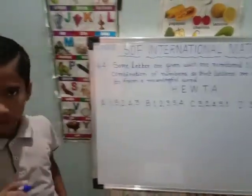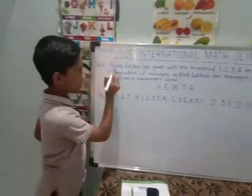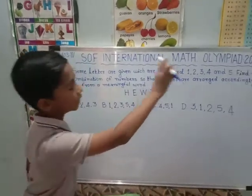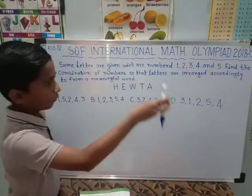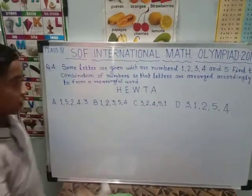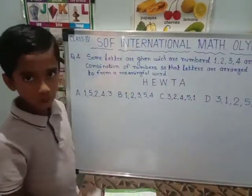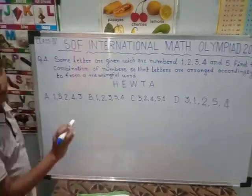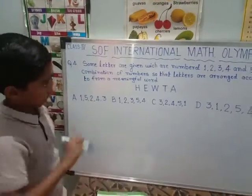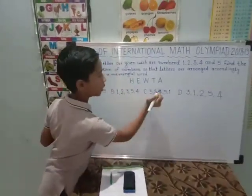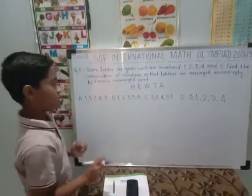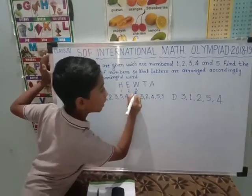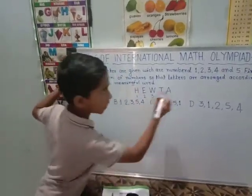We will start with the first question of the day. Some letters are given which are numbered 1, 2, 3, 4 and 5. Find the combination of numbers so that the letters are arranged accordingly to form a meaningful word. They asked us to make a meaningful word with these letters: 1, 2, 3, 4 and 5.